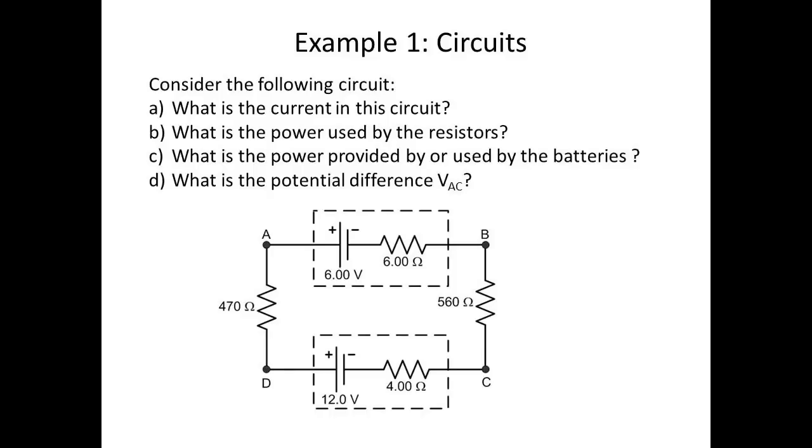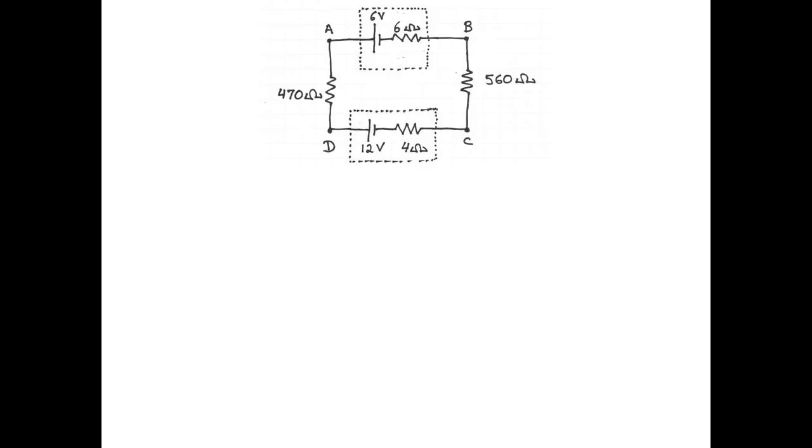Here is an example with a single loop circuit. We have a circuit that contains two batteries with internal resistance and two external resistances. We want to know what's the current in the circuit, what is the power used by the resistors, what is the power provided by or used by the batteries, and finally, what is the potential difference VAC. The first thing to do is always to copy the diagram, or if you're doing it on a test, get ready to scribble all over the diagram.